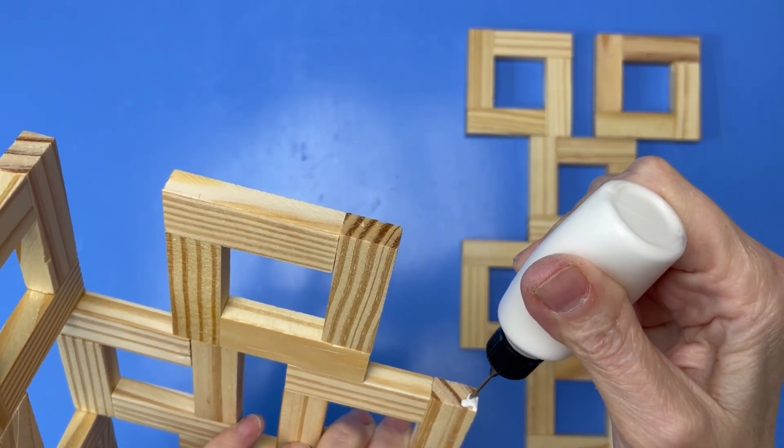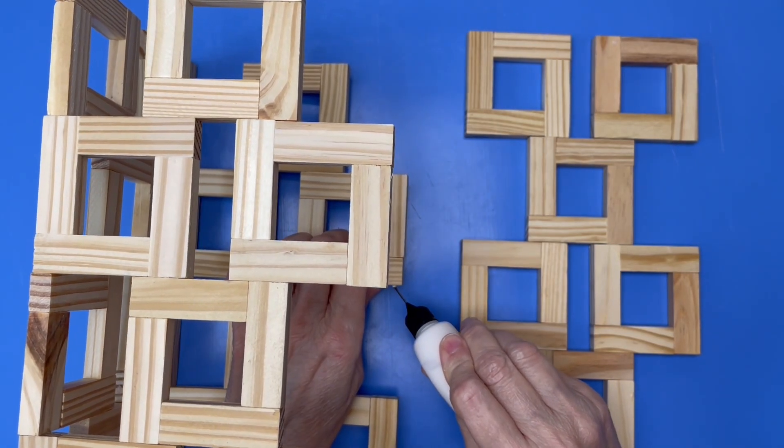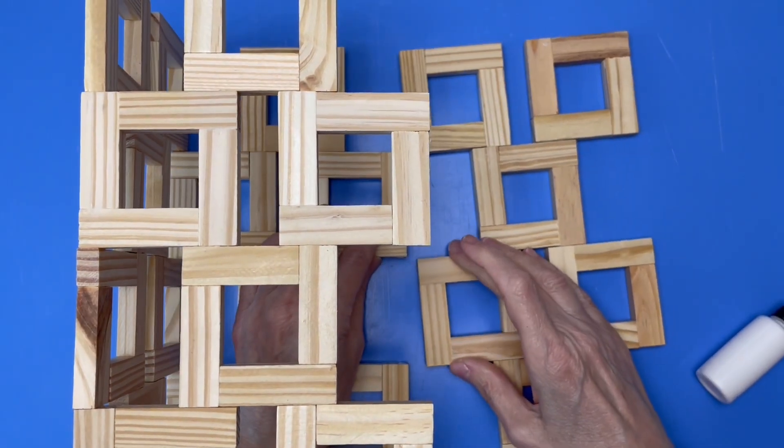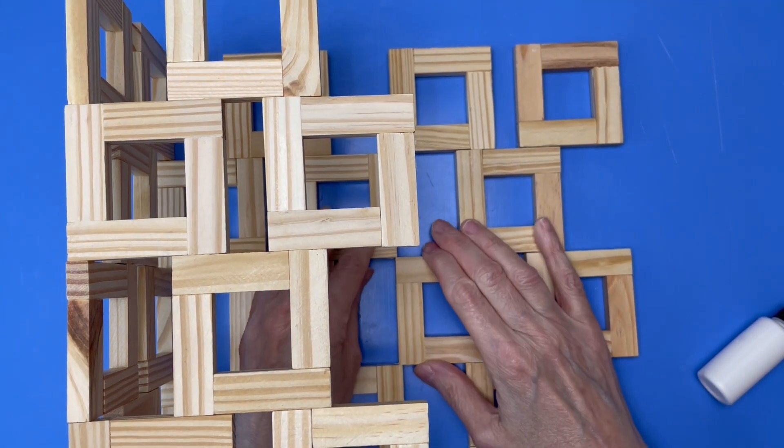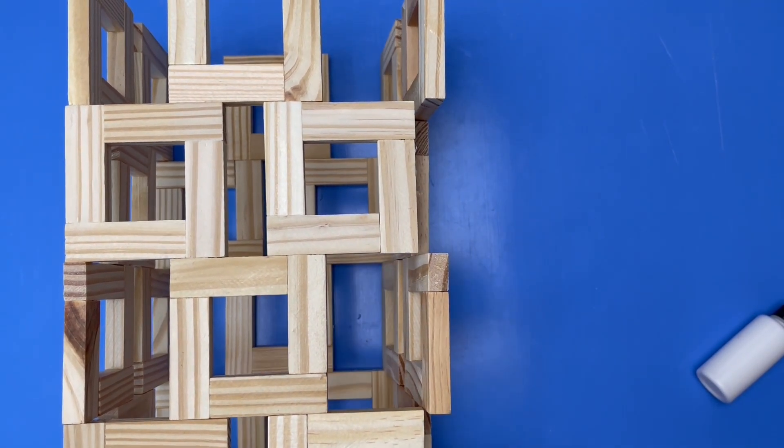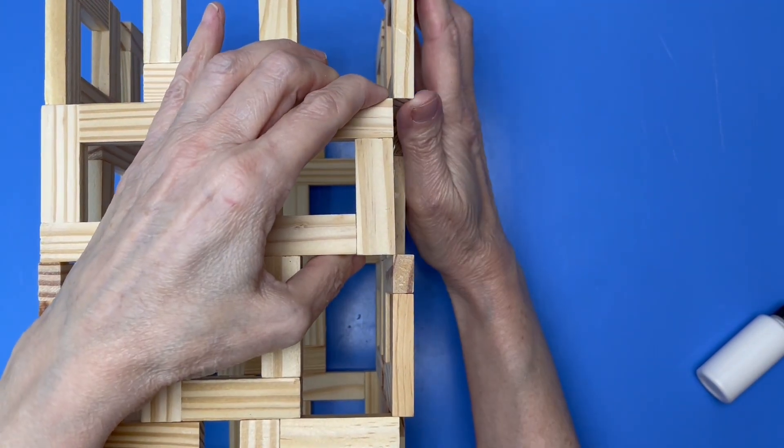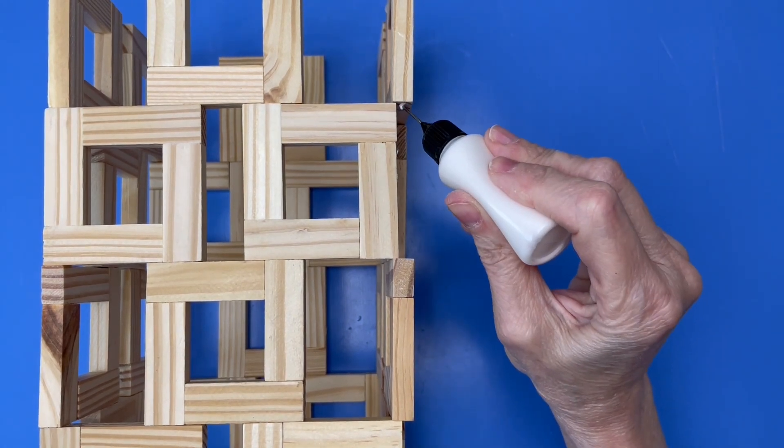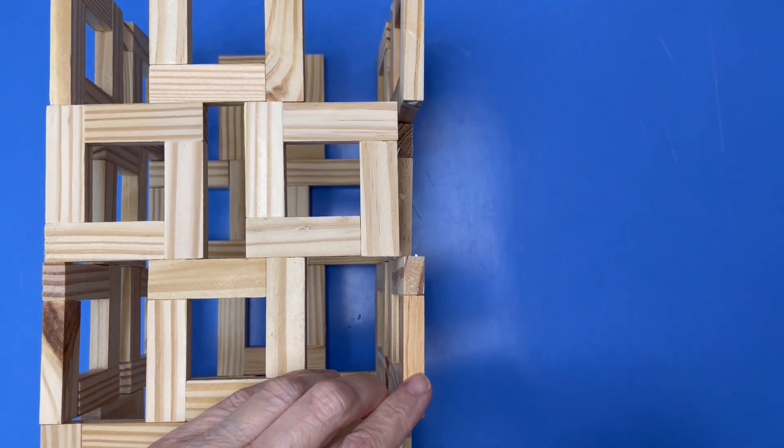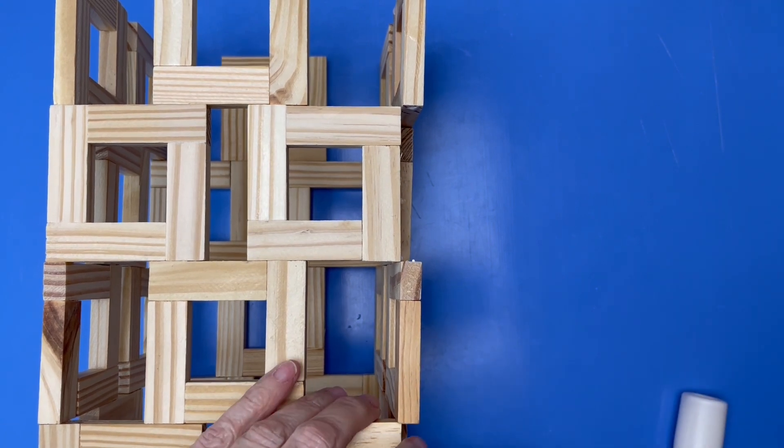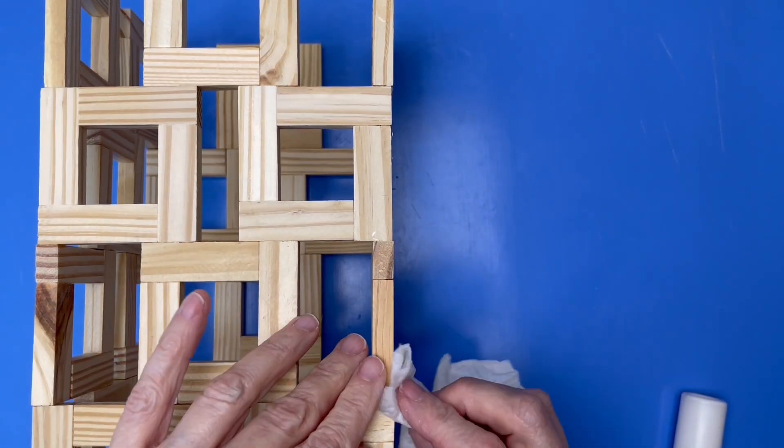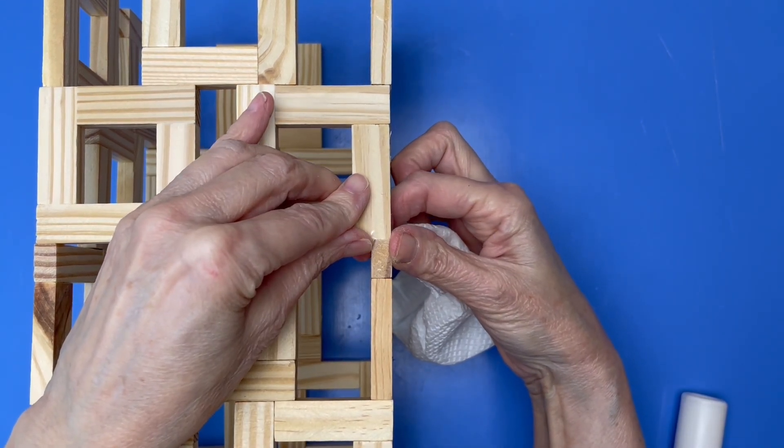For the last side, glue this bottom part on first. Swing the side up into position and glue it up top. Remove any excess glue with the damp paper towel and then just let everything dry.